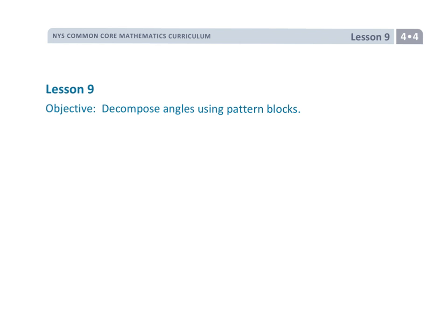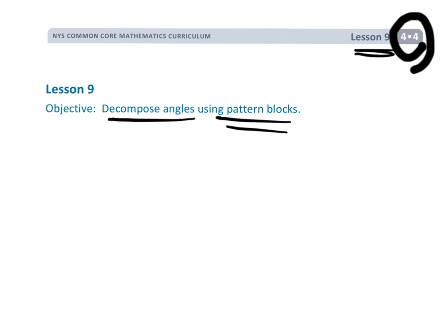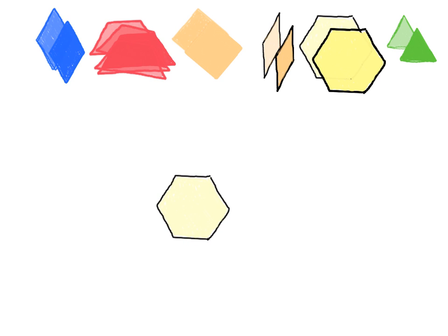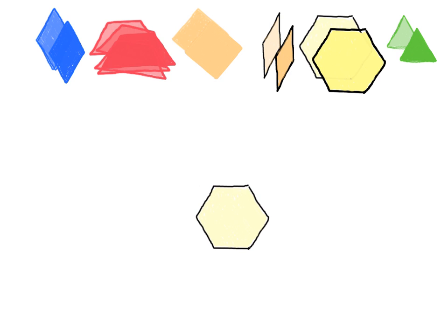All right, this is fourth grade module 4 lesson 9. In this lesson we're going to be decomposing angles using pattern blocks. To explain what this means, it's easier to just show you rather than explain it, so let's get going. We have a bunch of pattern blocks and we could just grab a protractor to measure, but the point of this lesson is to show you a new, different way to do it.